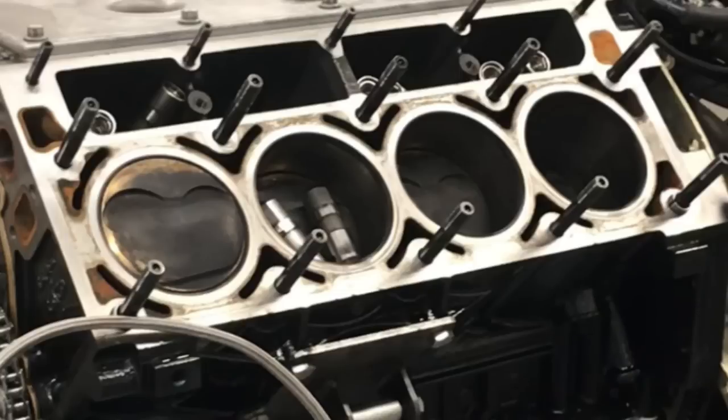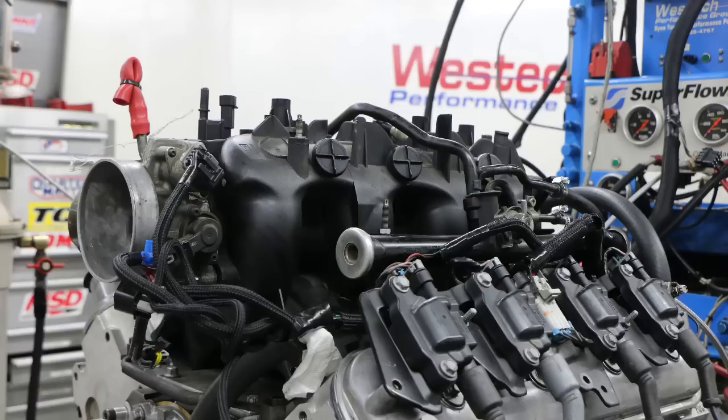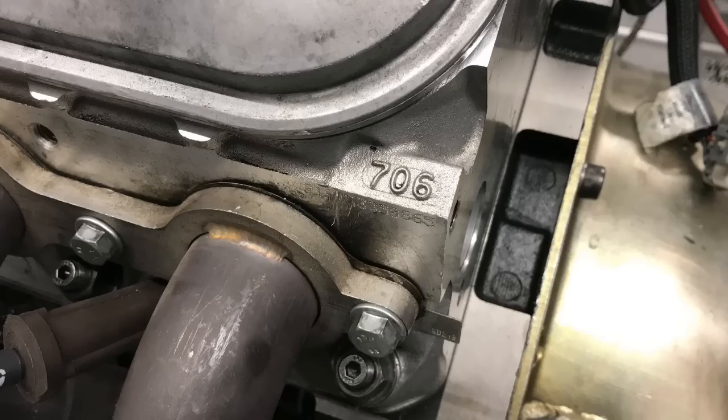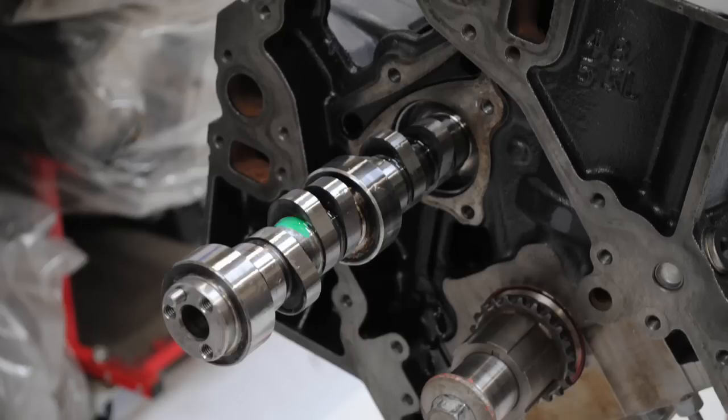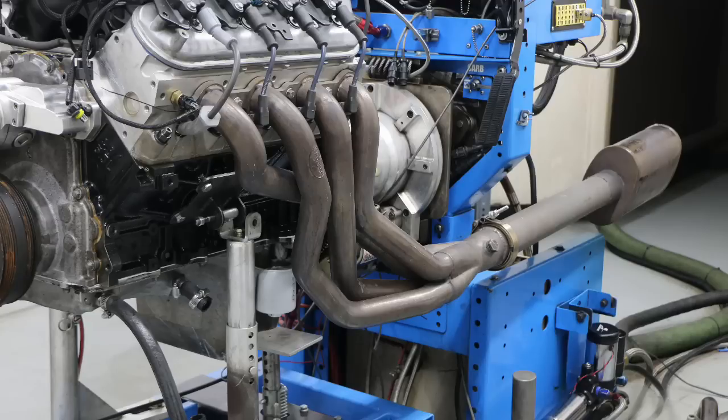It probably has an extra eight to ten horsepower over stock. We ran it with a stock truck manifold, the stock 706 heads, 62cc chambers. We had the stock LR4 camshaft, this was a Gen 3 motor. Stock block, stock crank, stock rods, and the JE pistons.